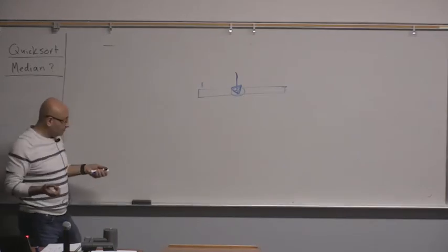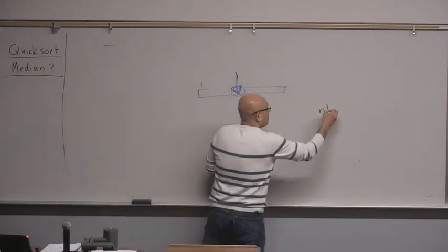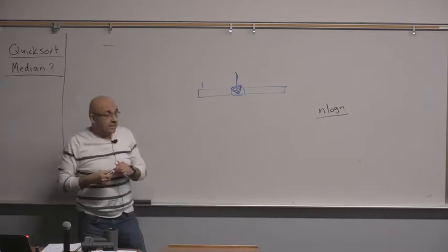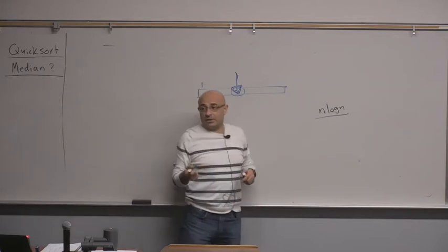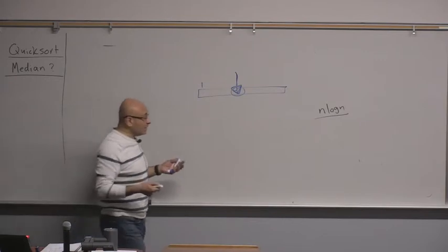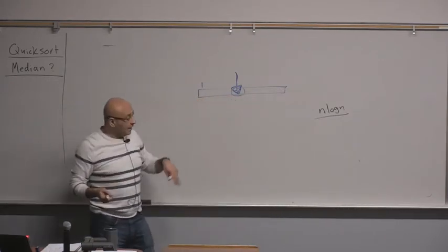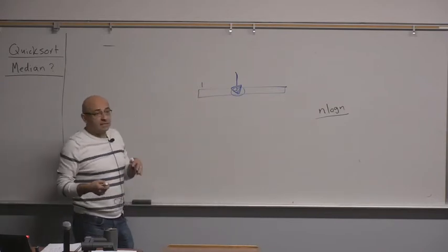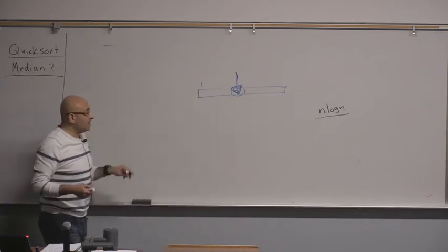Given that we already know how to do sorting in n log n, it means we already know how to compute the median in n log n — we just sort and pick the element in the middle. But the interesting question is: will it be possible to compute the median in less than n log n? And the answer is yes, there is a way of computing the median in less than n log n.